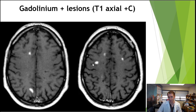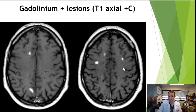You can see this very bright avid enhancement, which is typical for new multiple sclerosis lesions. They often enhance for approximately one month after formation. This would be atypical for a small subcortical stroke, even if it's acute.